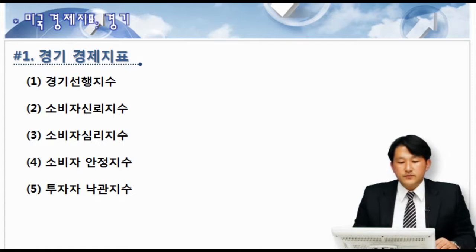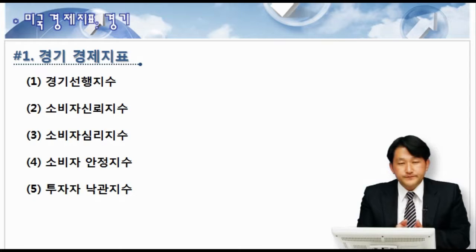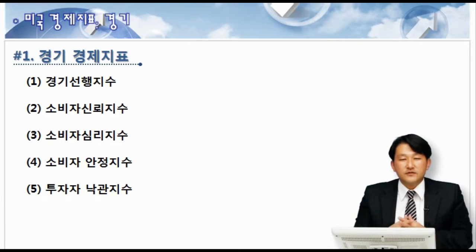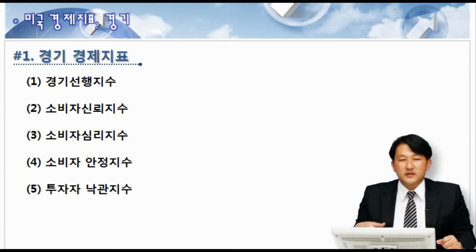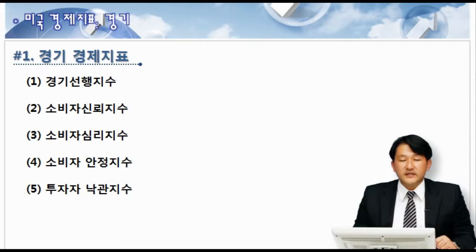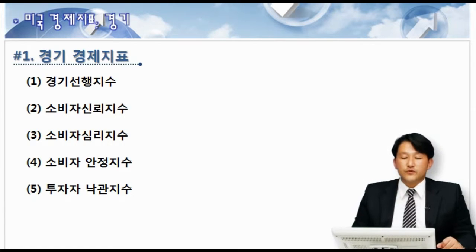미국 경제 지표 다섯 가지가 경기 경제 지표인데요. 이 경기와 관련된 경제 지표는 상대적으로 우리가 앞에서 배웠던 고용, 물가, 소비 등의 지표보다는 중요성이 좀 떨어집니다. 사실 채권, 주식, 외환 시장에서는 이게 실제 액션이 발생하는 게 아니라 사람들의 심리를 얘기하는 것이기 때문에 중요성이 좀 낮긴 합니다만, 미래를 예측할 수 있는 입장에서 보면 굉장히 중요한 지표라고 할 수 있겠죠.